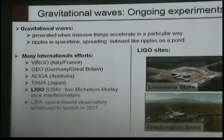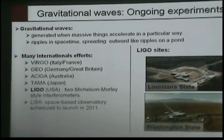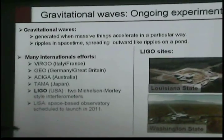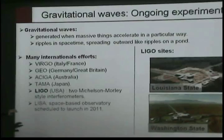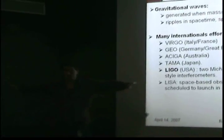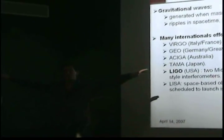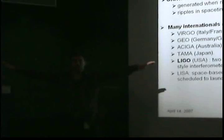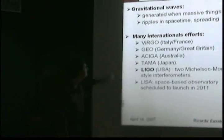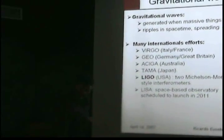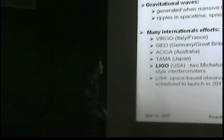Gravitational waves — you can think of them as ripples in space-time. They spread outward like ripples in a pond. And that's the way we like to think of gravitational waves.